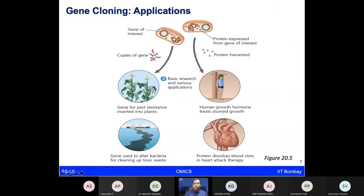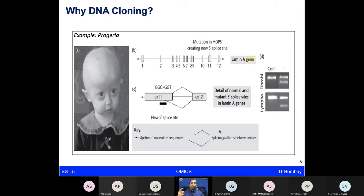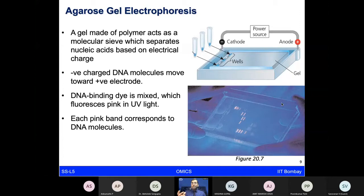If your goal is to study the lamin A gene for progeria syndrome, you want to amplify this gene, know how it works, and know its sequence. You make multiple copies and then test them on an agarose gel to look at the specific size of the amplification. To confirm the gene is the right size, you use a technique known as agarose gel electrophoresis.